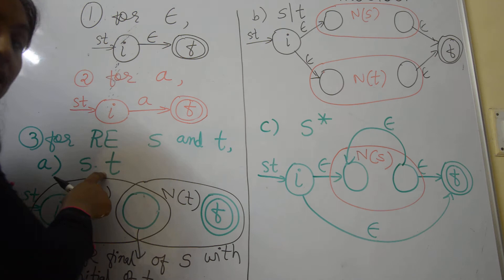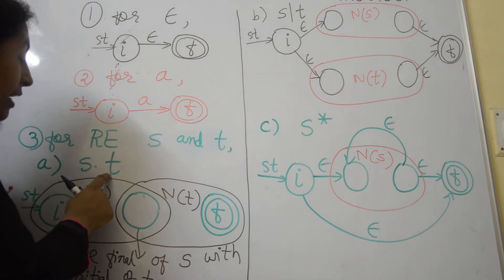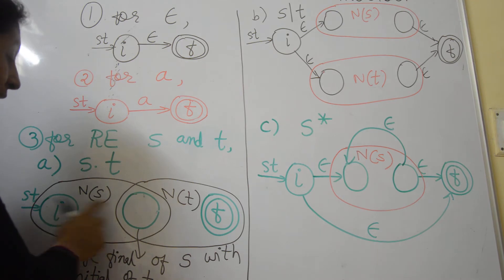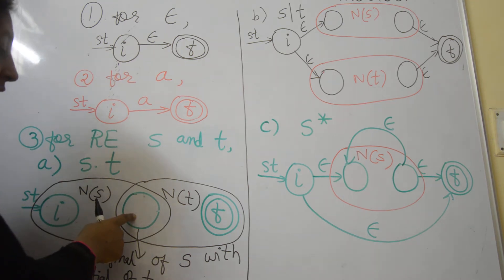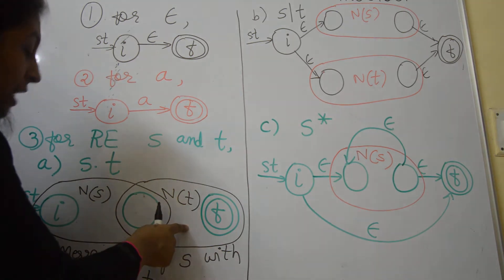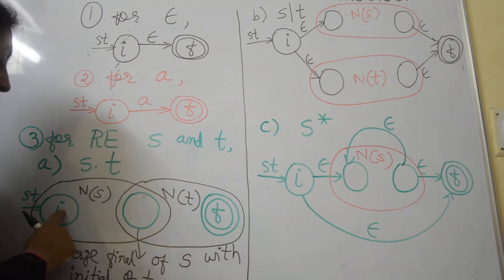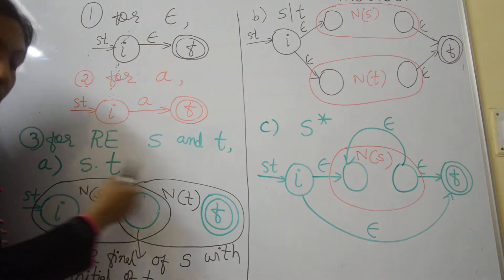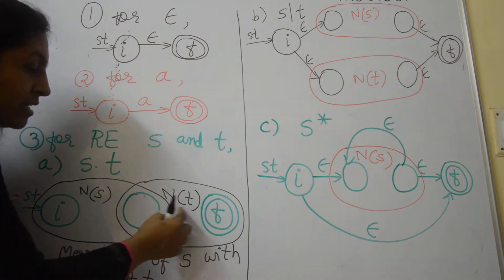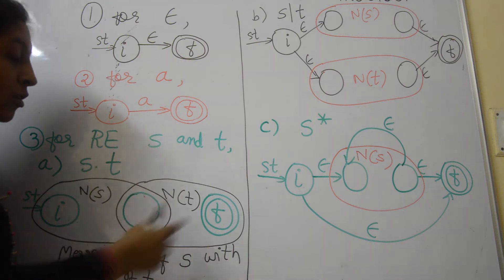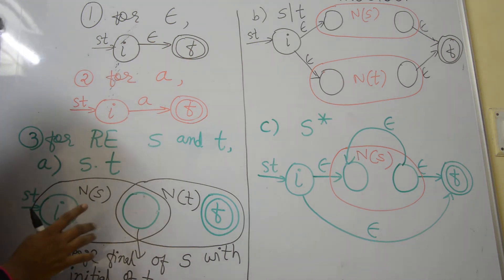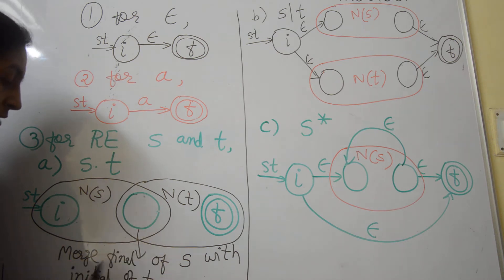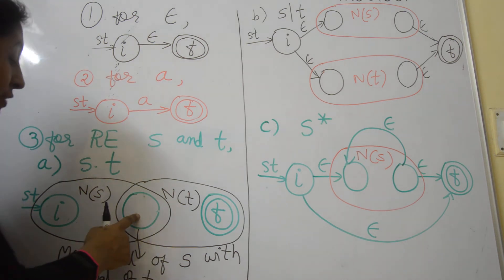To perform concatenation, that is S concatenated with T, first construct a diagram of S and then followed by the diagram of T. The initial state of NFA S is the initial state of the concatenation, and the final state of NFA T is the final state of the concatenation. Here you have to merge the final state of S with the initial state of T.